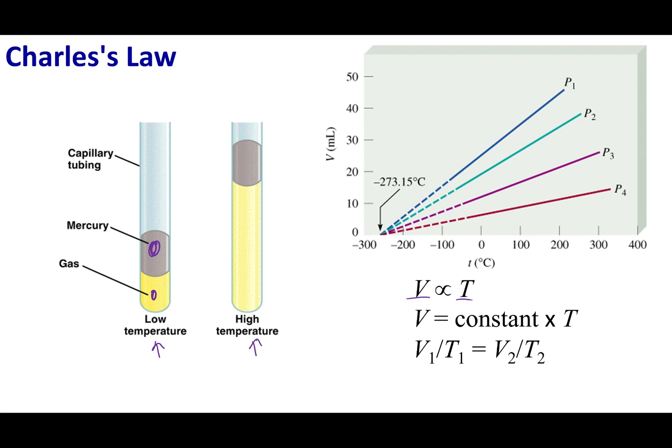What he finds is that as you increase the temperature, the volume goes up. Volume and temperature are directly proportional. When one goes up, the other goes up. I can write this as volume equals a constant times temperature, or rearrange it to V1 over T1 equals V2 over T2. The ones are the initial conditions, the twos are the final condition.